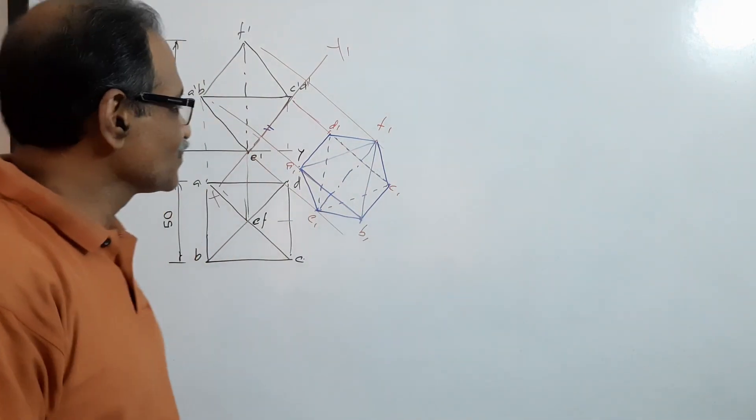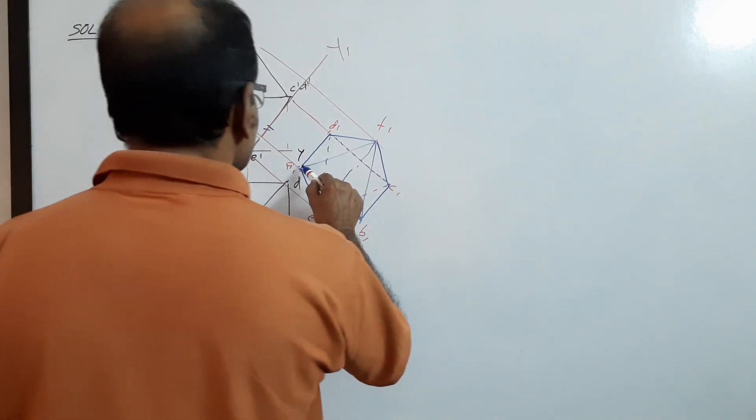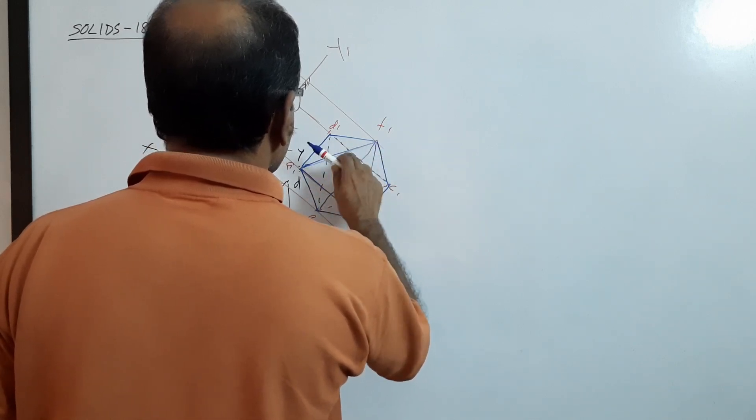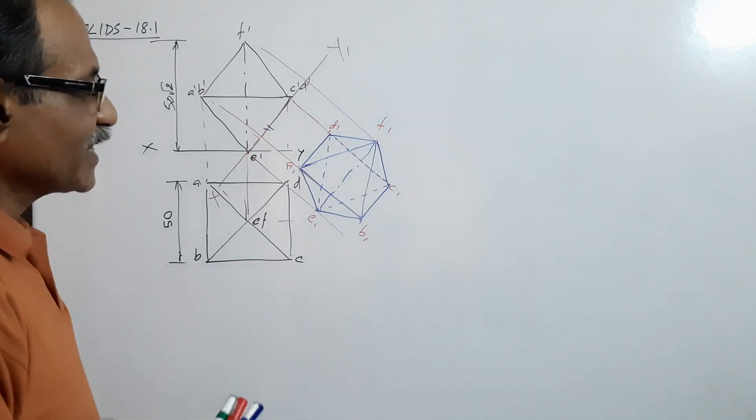See, you can do it in two minutes. You have got the octahedron and then you have got the auxiliary plan. How is the octahedron now? The octahedron is lying on the ground on triangle CDE.